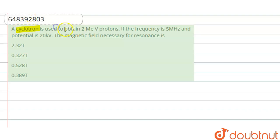A cyclotron is used to obtain 2 mega electron volt protons. If the frequency is 5 megahertz and potential is 20 kilovolt, find the magnetic field necessary for resonance.